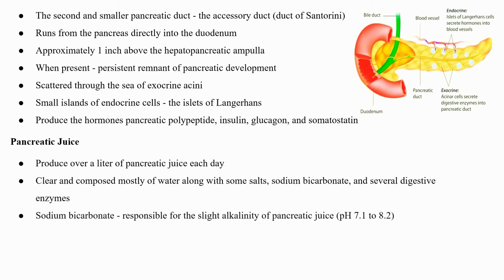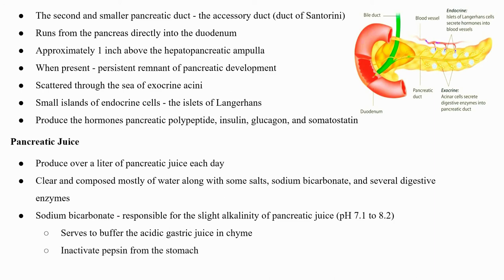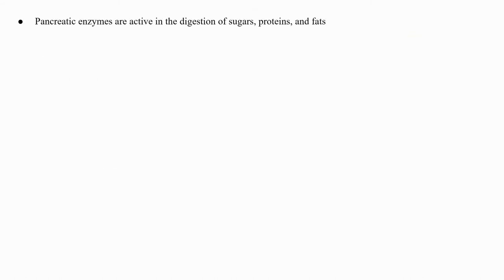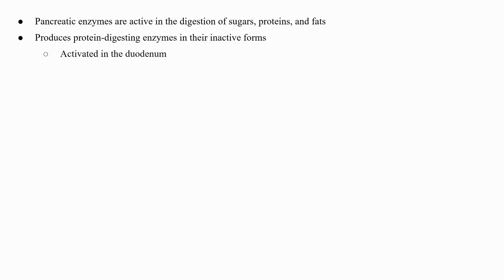Sodium bicarbonate is responsible for the slight alkalinity of pancreatic juice (pH 7.1 to 8.2), which serves to buffer the acidic gastric juice in chyme, inactivate pepsin from the stomach, and create an optimal environment for pH-sensitive digestive enzymes in the small intestine. The pancreas produces protein-digesting enzymes in their inactive forms, which are activated in the duodenum. If produced in an active form, they would digest the pancreas itself — which is exactly what occurs in the disease pancreatitis.